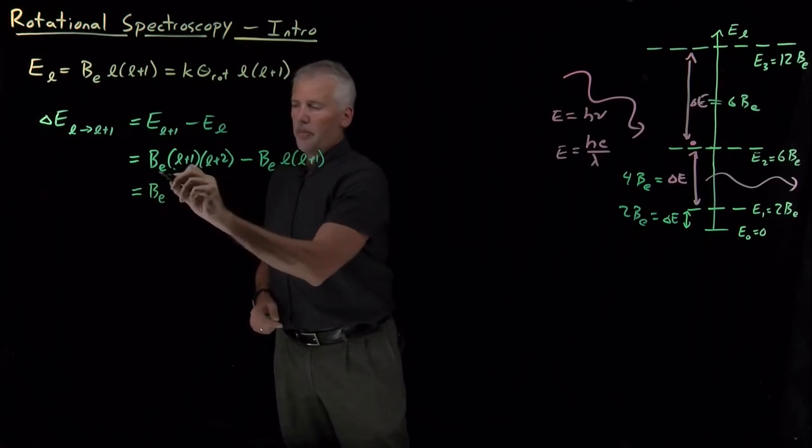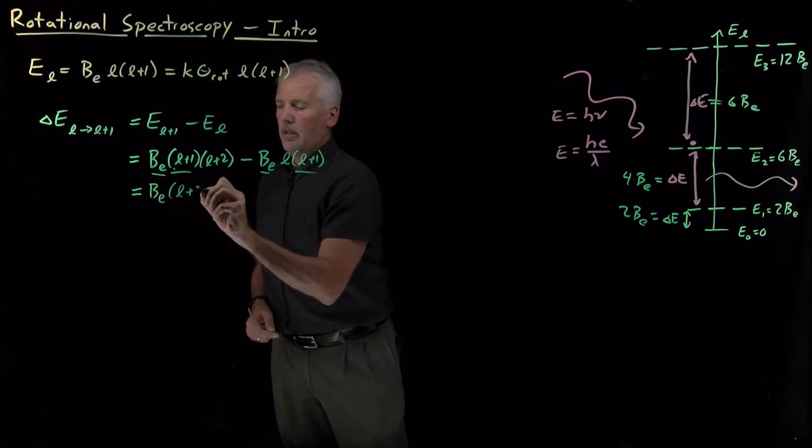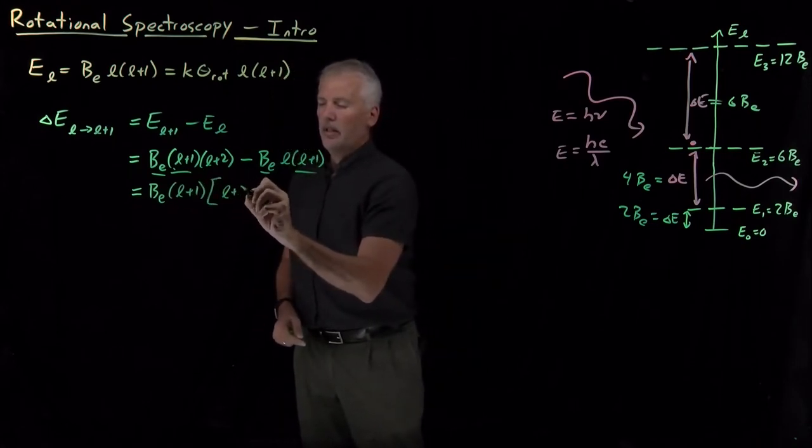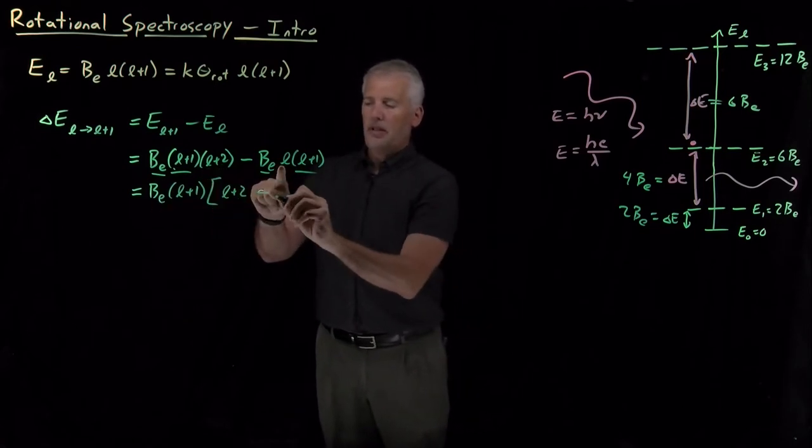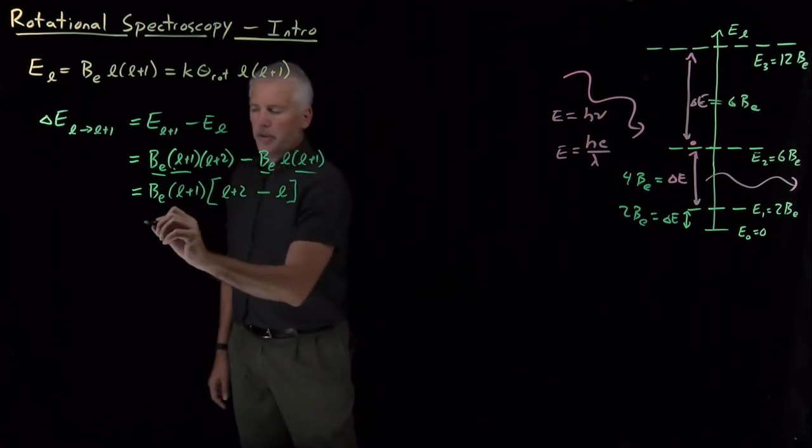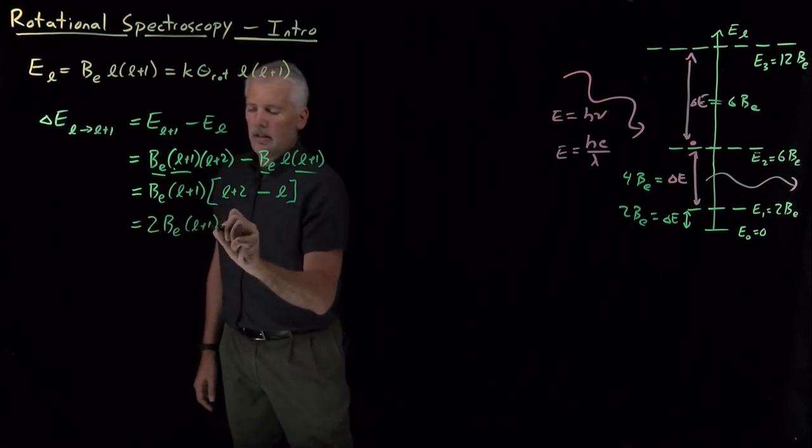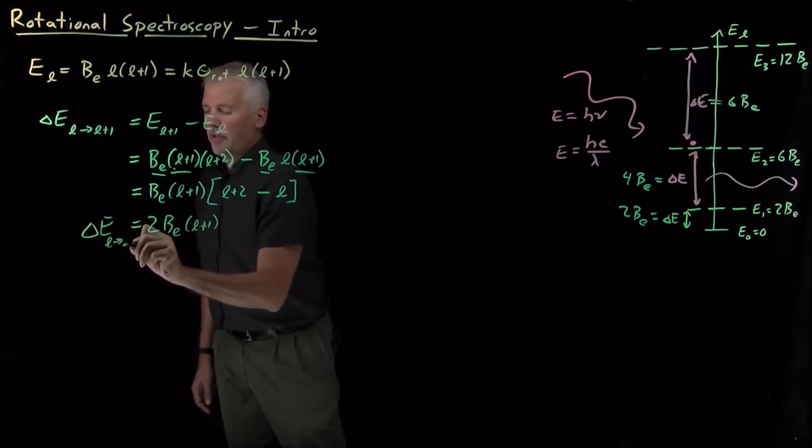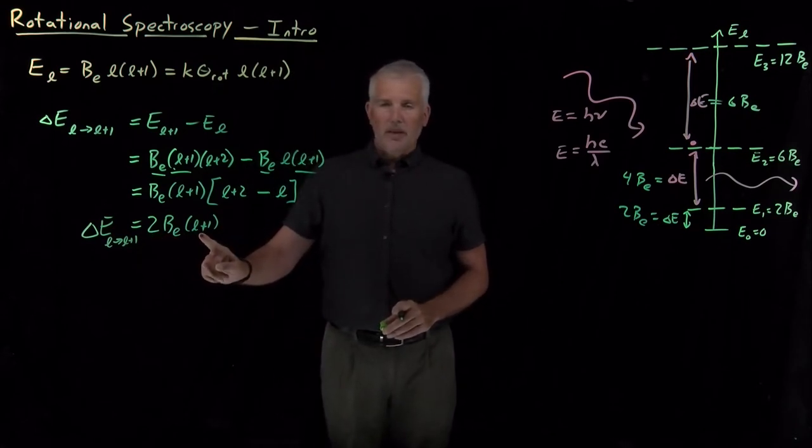So both of these terms have a BE and an L+1. And what's not included out front, I have an L+2 minus an L, and the L's cancel, leaving me with just a two. And I can say that the gap, this energy level difference in going from L to L+1, is twice the rotational constant times L+1.